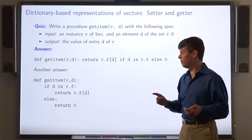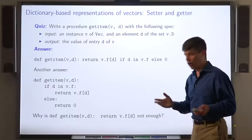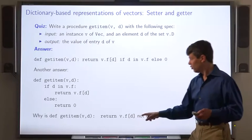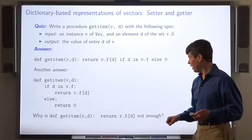Here's an alternative definition, a little less Pythonic. Now, why is this code insufficient? This code just returns the value that D maps to in the dictionary V dot F.